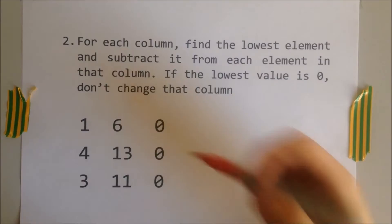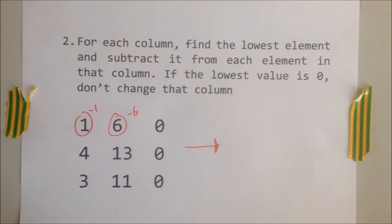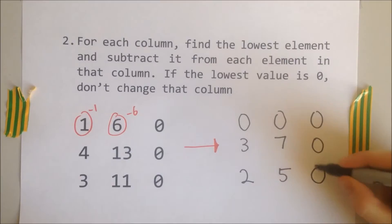Step two, for each column, find the lowest element and subtract it from each element in that column. If the lowest value is zero, don't change that column. Here we start from the leftmost column and the smallest number is 1, so we subtract this. Then we move to the next column and subtract 6. The final column will be unchanged as the smallest number is zero.